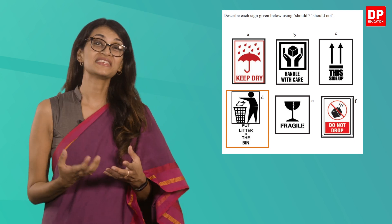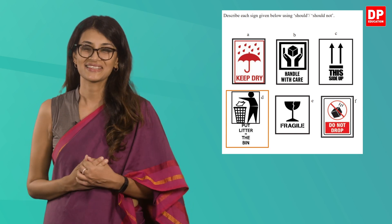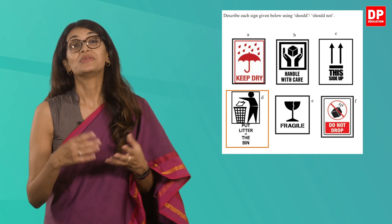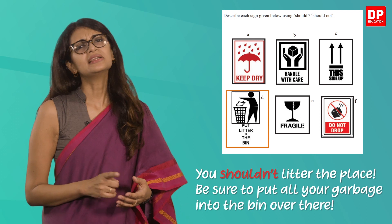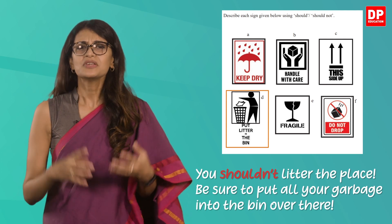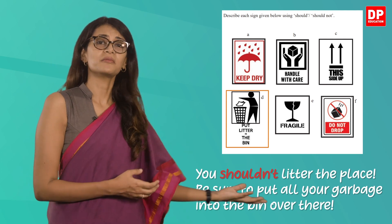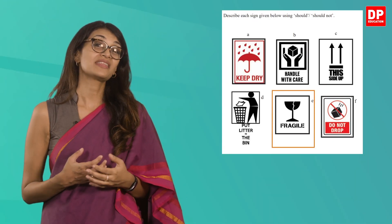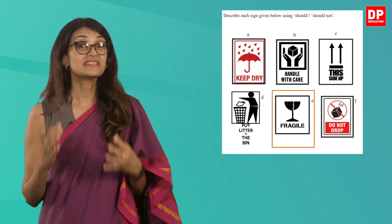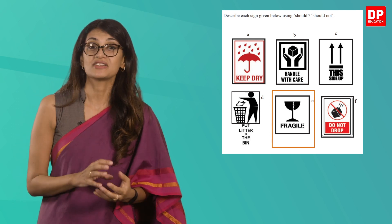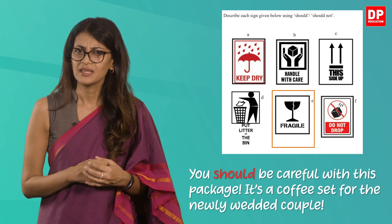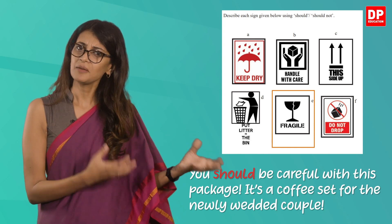Sign D, which you would have seen in public places, has the wording litter in the bin. So you can say: you shouldn't litter the place; be sure to put all your garbage into the bin over there. Sign E is also similar to the handle with care sign. It states that whatever is packed is fragile and should be moved or lifted carefully. You should be careful with this package — it's a coffee set for the newly wedded couple.